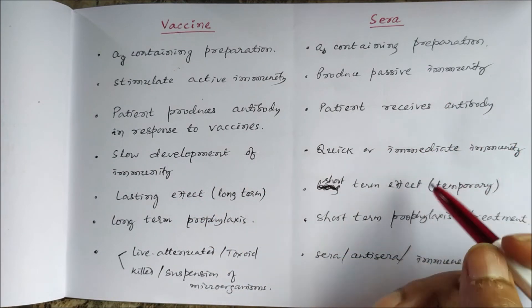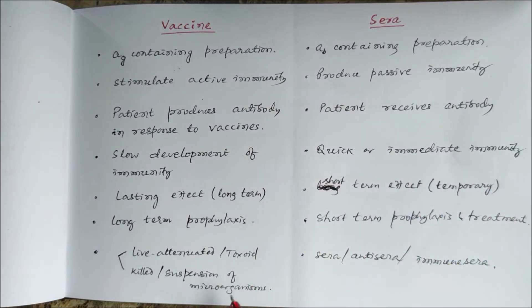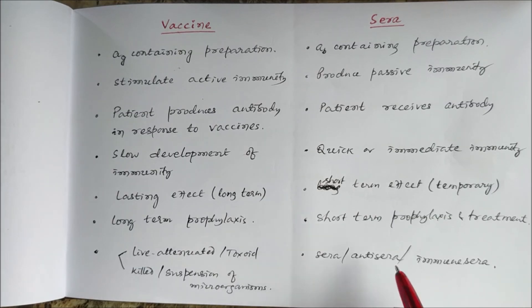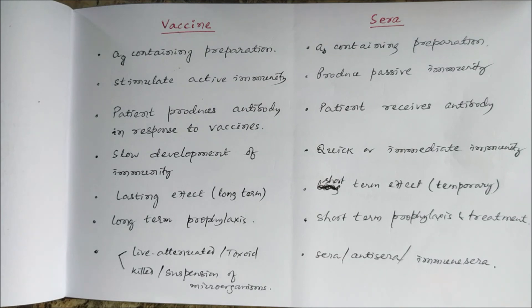Sera directly provides the antibody, so there is quick or immediate immunity. Vaccines are available either in the live attenuated form — also known as toxoid — or in the killed form, as suspensions of microorganisms or viruses. Sera, as already discussed, are also known as anti-sera or immune sera. This is all about the difference between vaccines and sera.